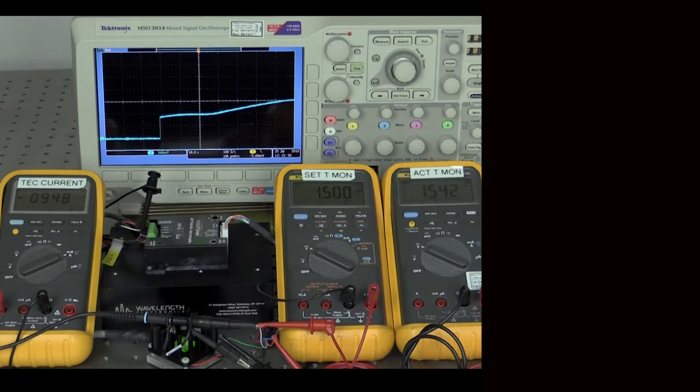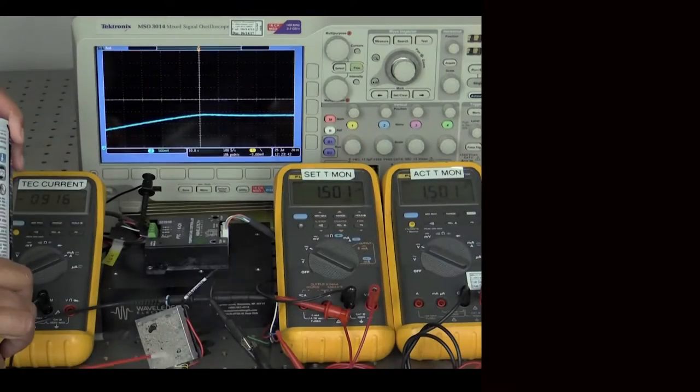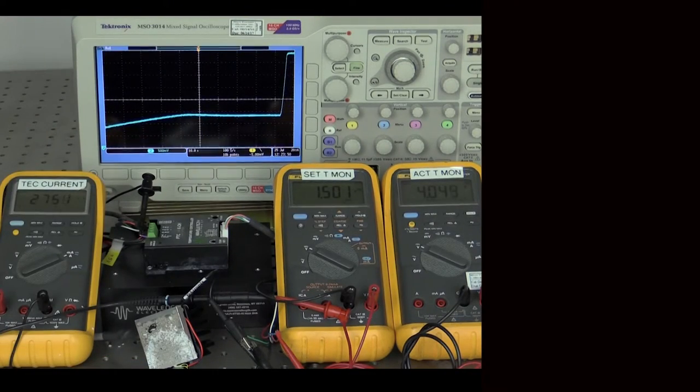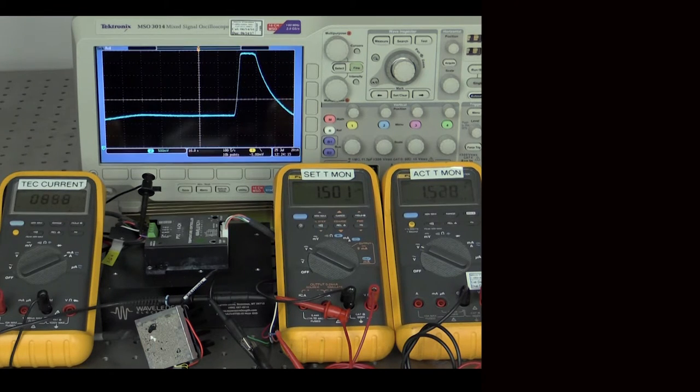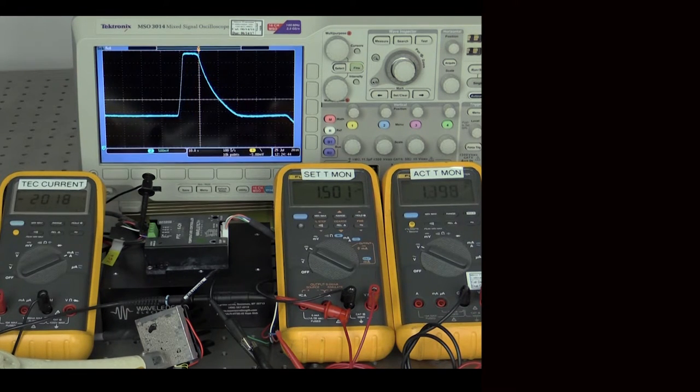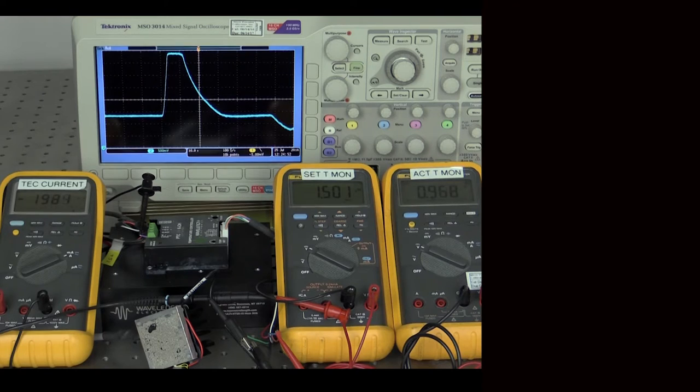If I put some freeze spray on the sensor, we can watch the temperature drop. A thermistor is a negative temperature coefficient sensor, so resistance and voltage go up when temperature drops. You can see the PTC controller respond to the lower temperature by driving more current through the thermoelectric to return the sensor to the setpoint. If we use a heat gun on the sensor, the temperature increases and the thermoelectric current changes value to bring the sensor temperature back to setpoint. That's it! You're up and running a temperature controlled system with the PTC 10KCH temperature controller.